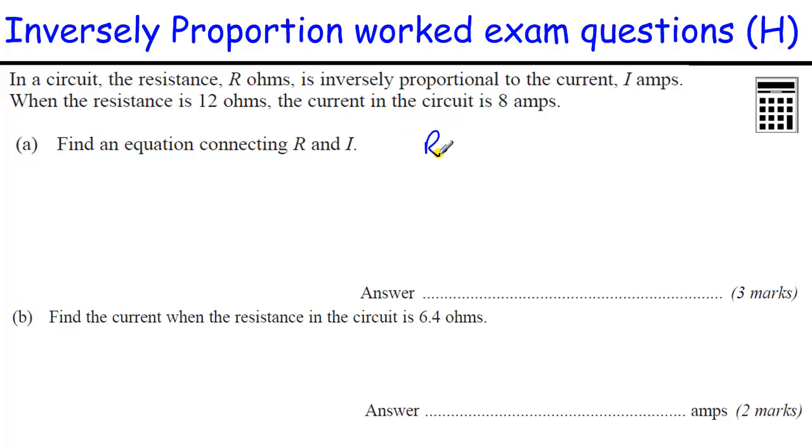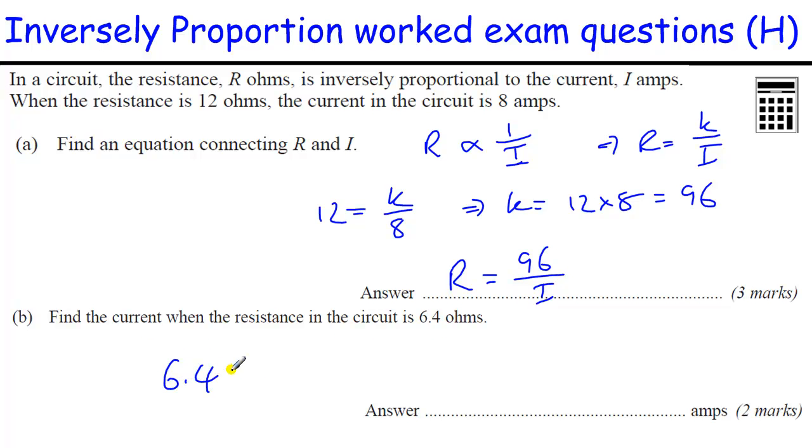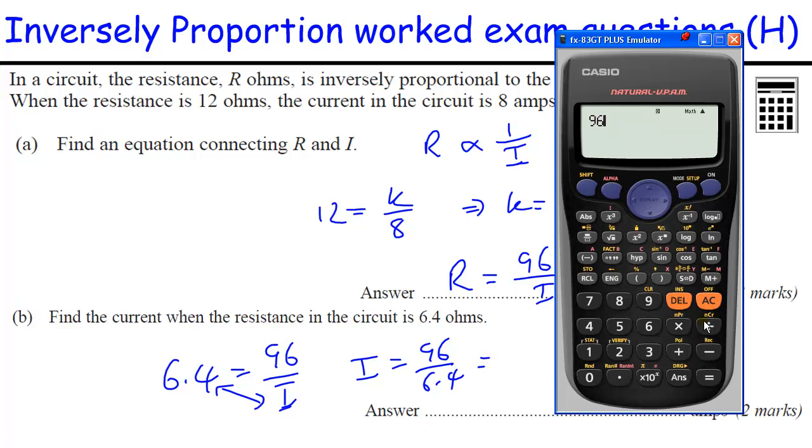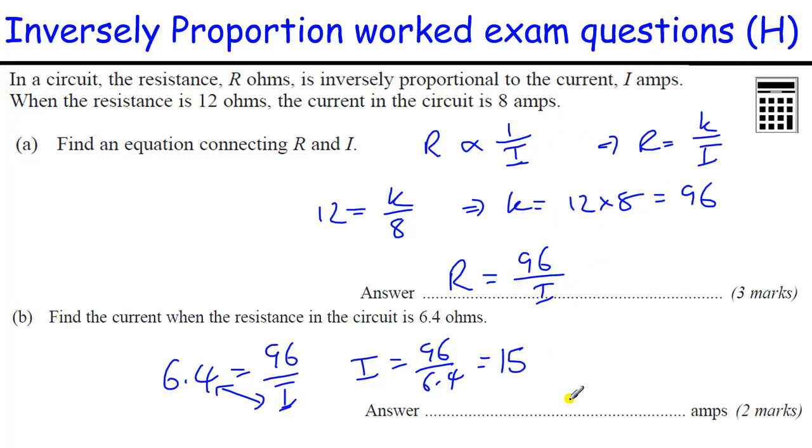Resistance R ohms is inversely proportional to the current I, so it's proportional to 1 over I. Inverse meaning 1 over. When the resistance is 12, that tells us R equals K over I. Resistance is 12, the current is 8, so K over 8. That tells us K equals 12 times 8, which is 96. So the equation is R equals 96 over I. Finally, when the resistance is 6.4, so 6.4 equals 96 over I. We can swap these two over to get I equals 96 divided by 6.4. This is a calculator question, so 96 divided by 6.4 is just 15.